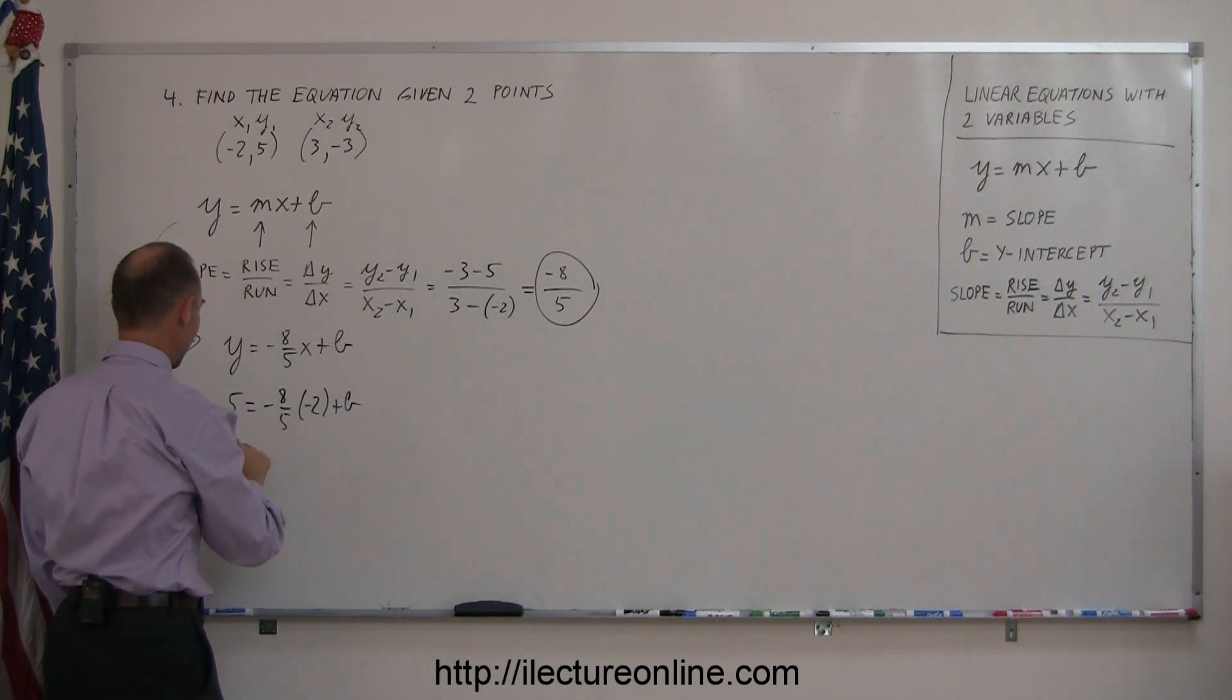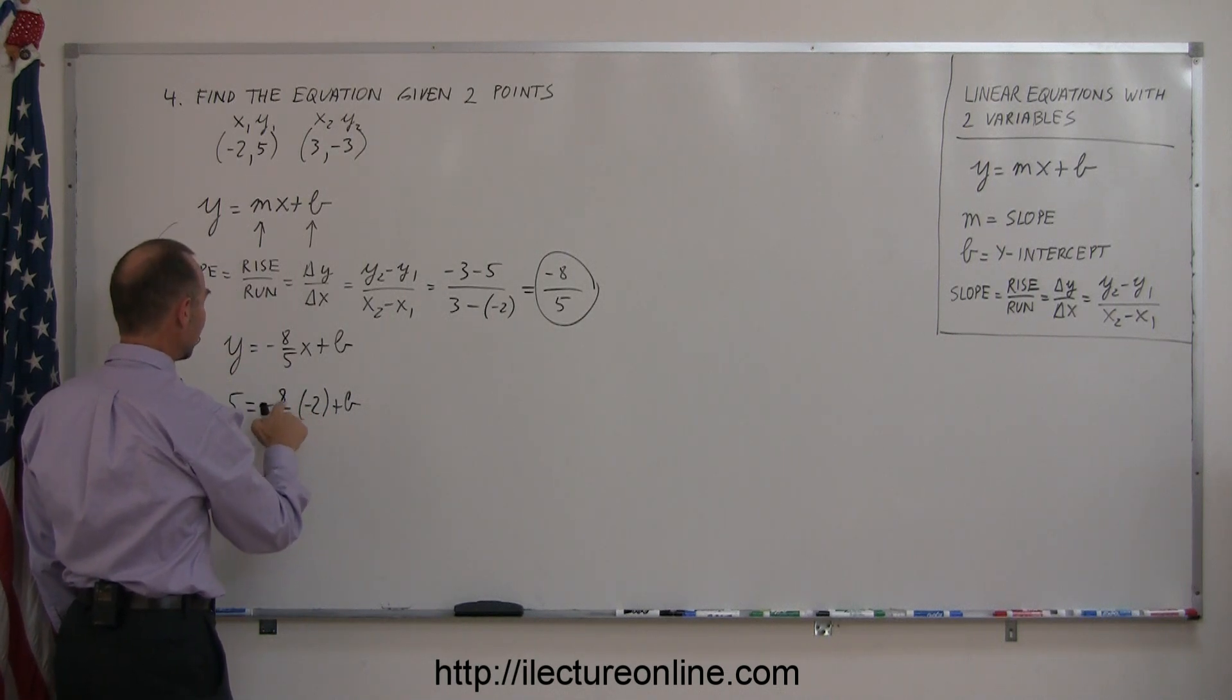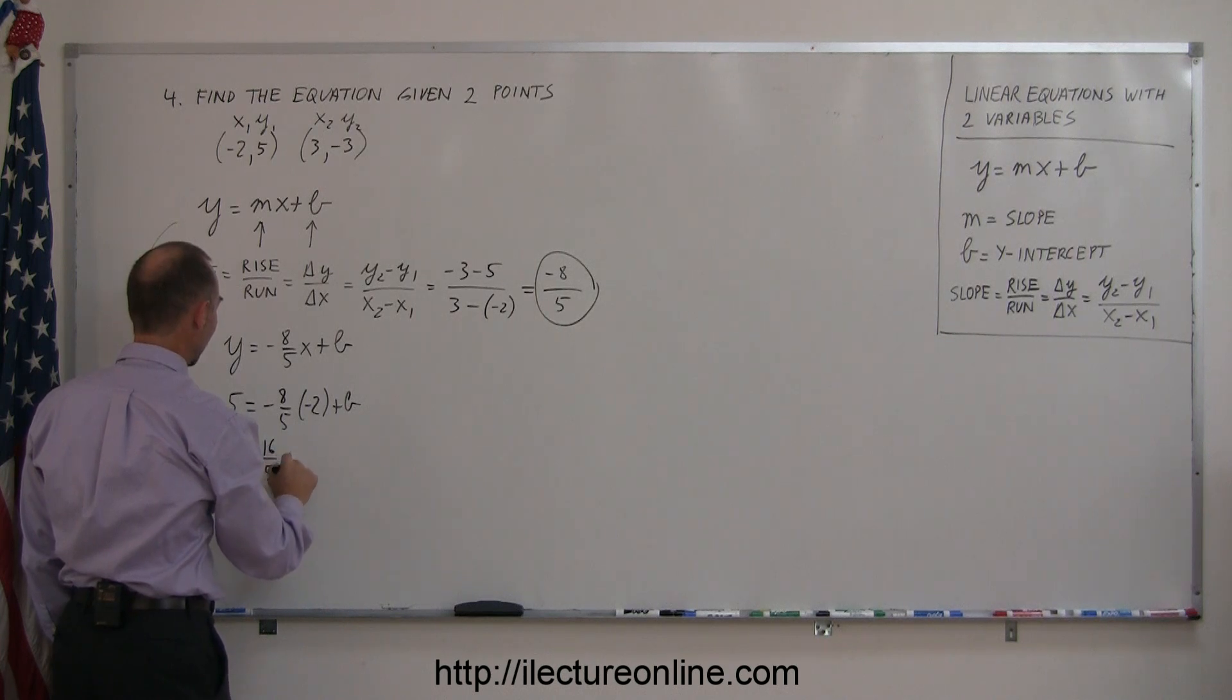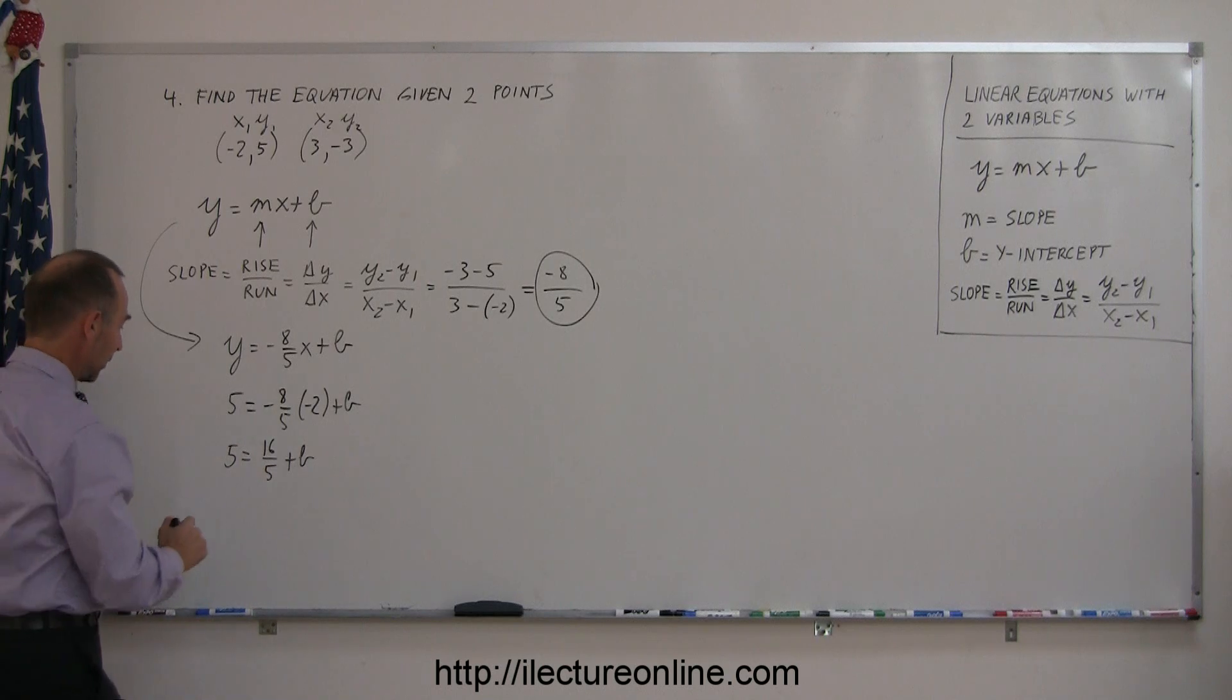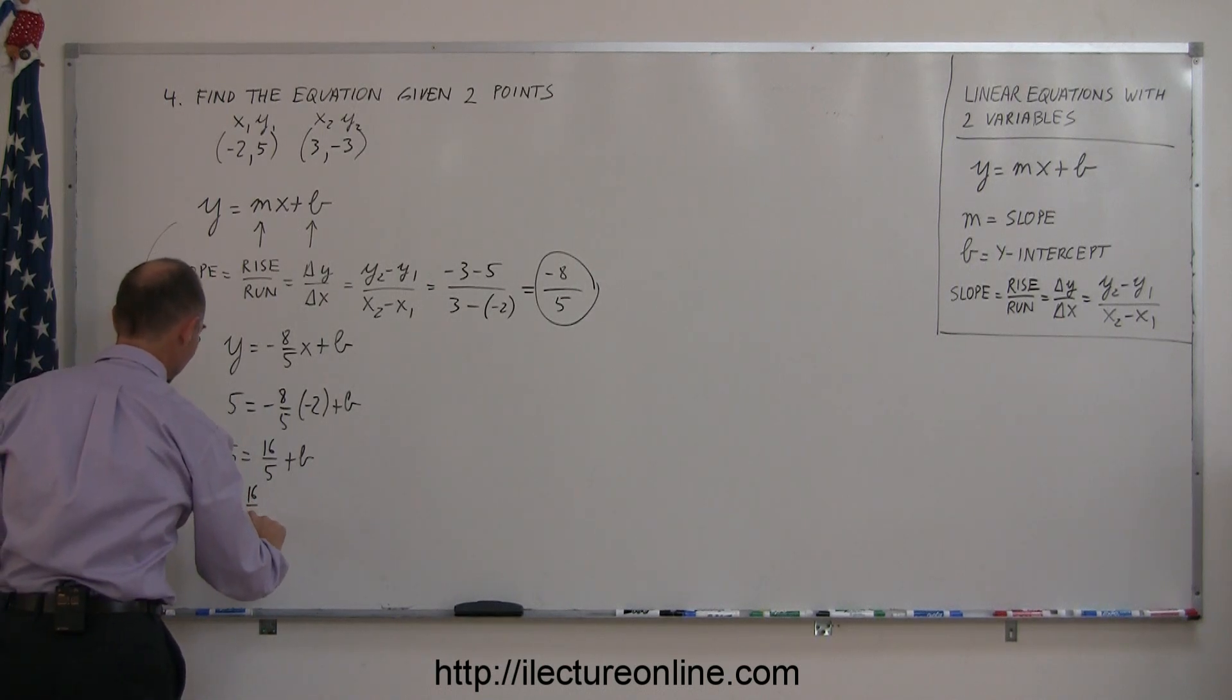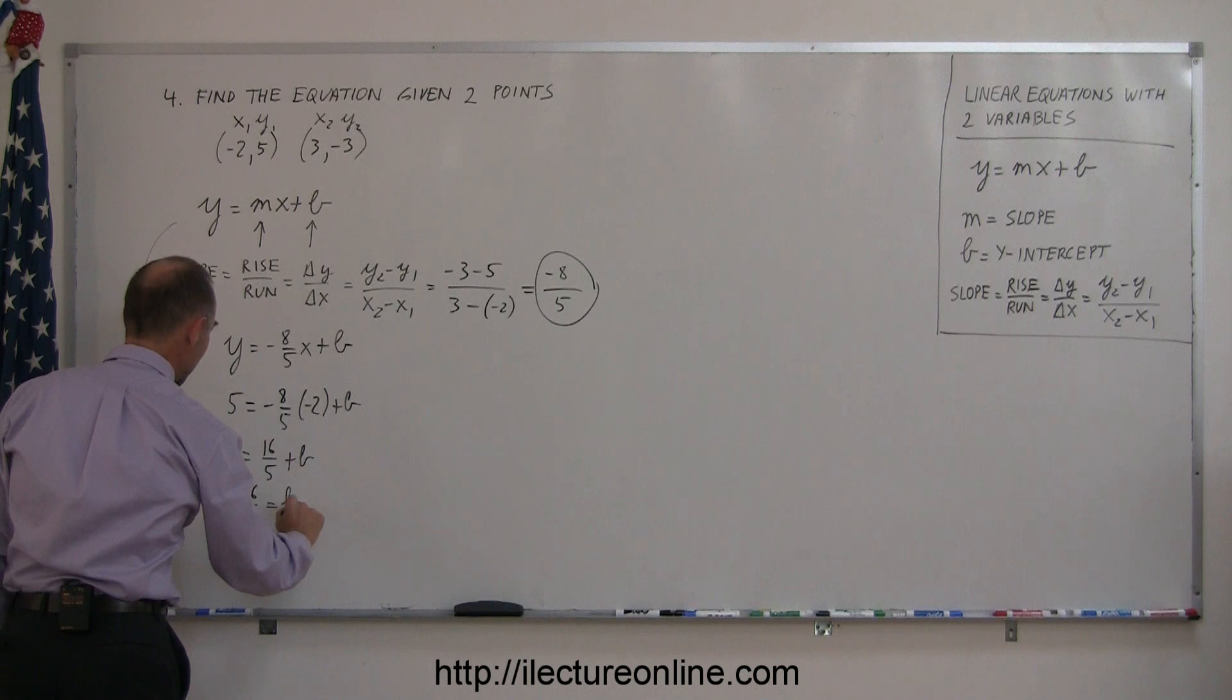So we have 5 = -2 times -8/5, which is positive 16/5, plus b. Now we move the 16/5 to the other side: 5 - 16/5 = b.